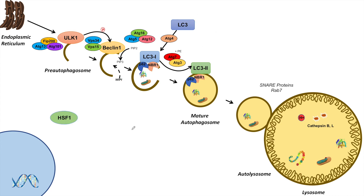The next transcriptional repressor of macroautophagy is heat shock factor 1, or HSF1. We can think about HSF1 as being the opposite of NRF2. We've learned that NRF2 upregulates P62, so HSF1 does the opposite — it actually suppresses the expression of P62. That is the major effect of HSF1: it suppresses the levels of P62.